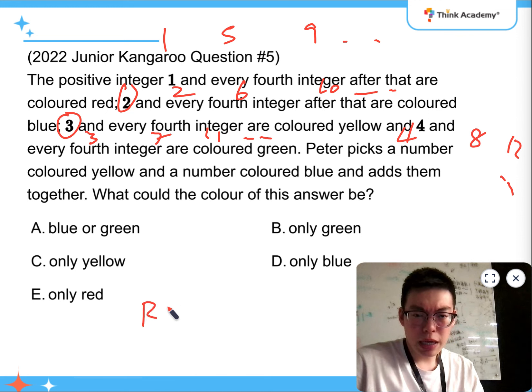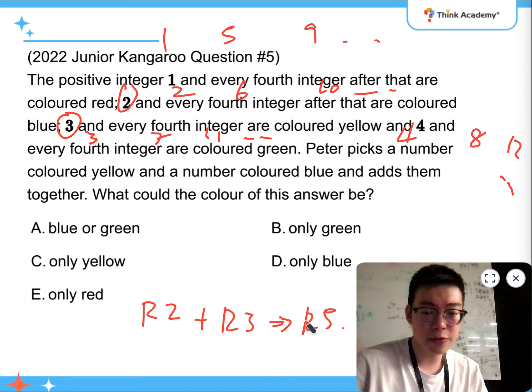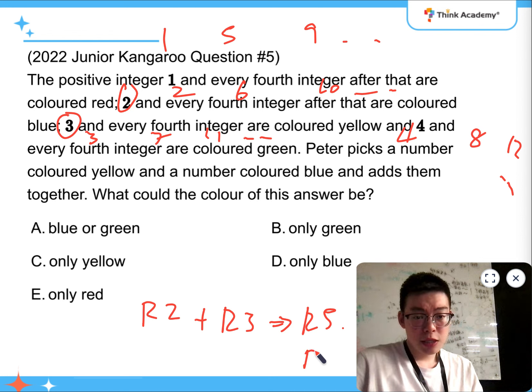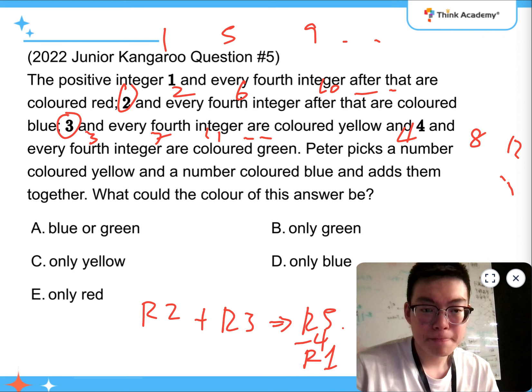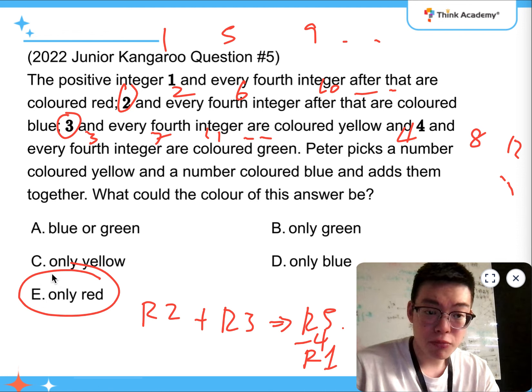So, if you add up a remainder of 2 with a remainder of 3, you're going to get remainder of 5 when divided by 4. Which is impossible, because 5 is greater than 4. So, it's going to end up with remainder 1 after tick away 4. So, it means that it has to be a red one. That's remainder property.